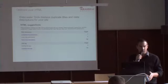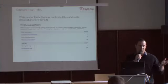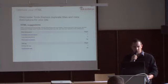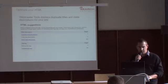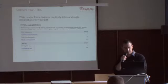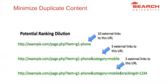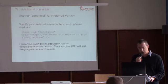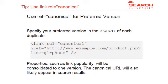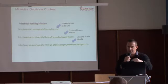Duplicate content is an issue for search engines because they don't like it and will always give preference to one page over another. Try to avoid duplicate content and make unique meta descriptions and unique titles for every page. If you have the same content accessible via different URLs and external links pointing to those different URLs, you can use the canonical link tag to tell search engines your preferred version, avoiding ranking dilution across duplicate URLs.